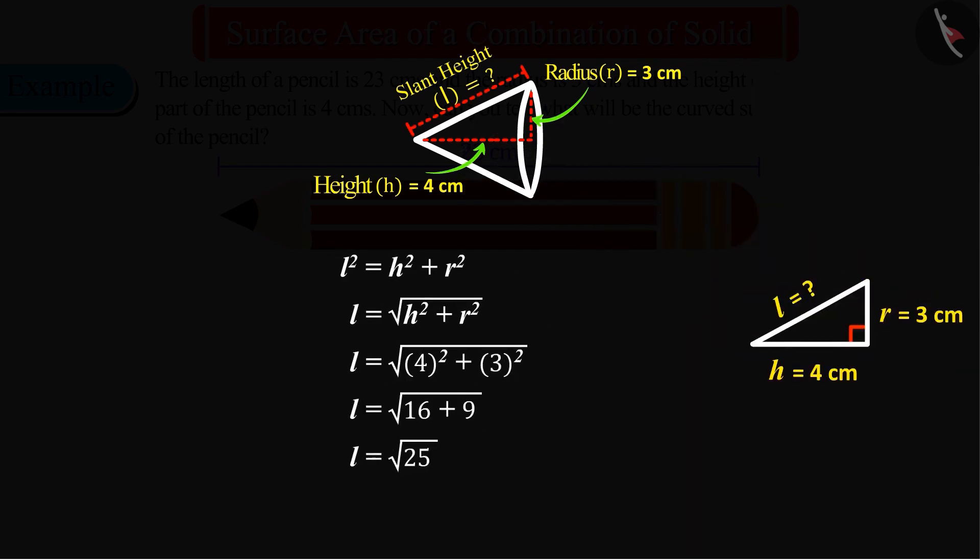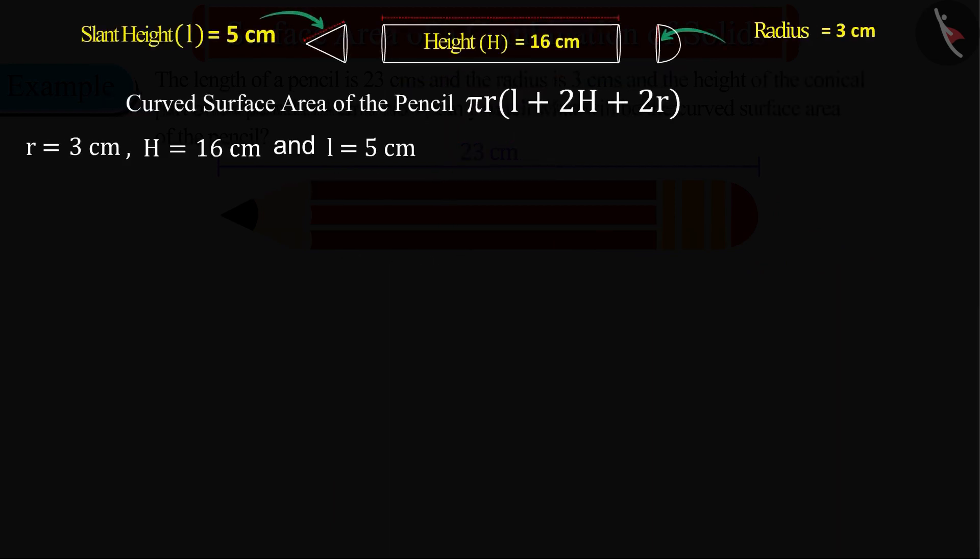We can find the slant height of the cone with this formula, which we get as 5 centimeters, by substituting the value of the radius r, the height h, and the slant height L in this formula. And upon solving,